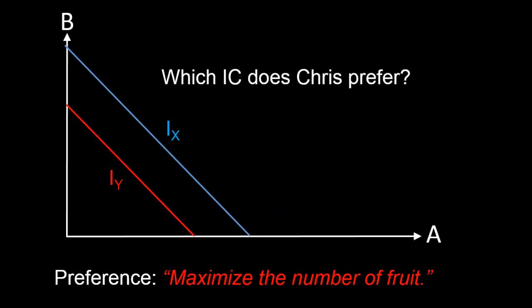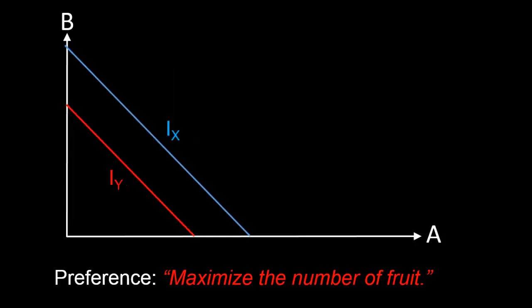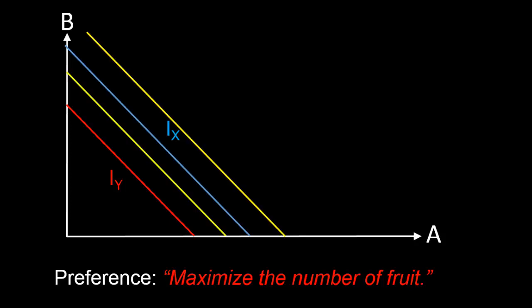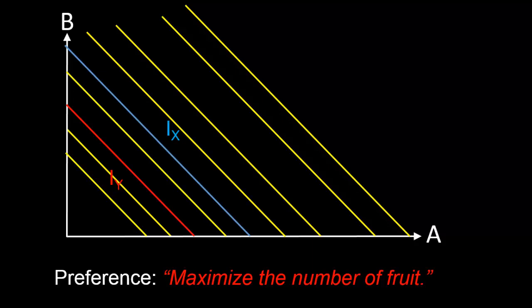Now we might ask: which indifference curve does Chris prefer? Given a bundle on each indifference curve, which bundle does Chris prefer? It's probably not difficult to figure out that he's going to prefer the white bundle to the yellow bundle. More generally, Chris is going to prefer any bundle on the indifference curve ix to any bundle on the indifference curve iy. So what we've done is construct two indifference curves corresponding to the same single preference. If we had liked, we could easily have constructed several more indifference curves.